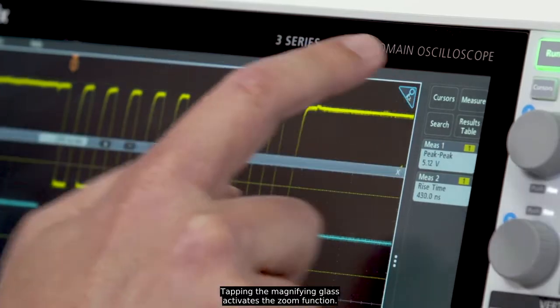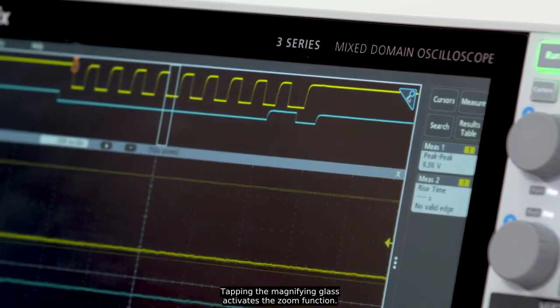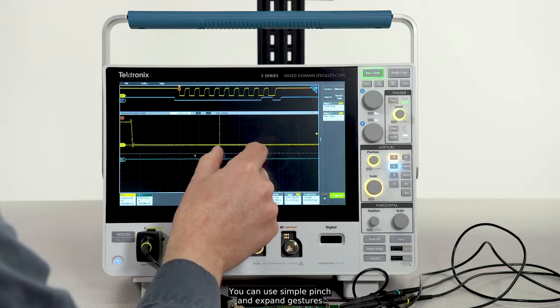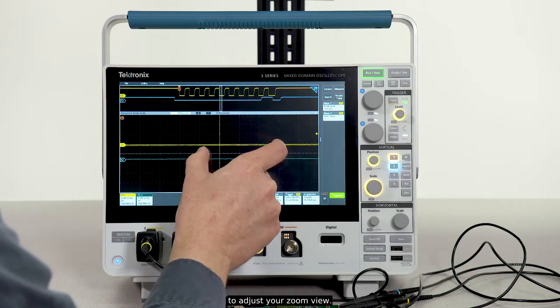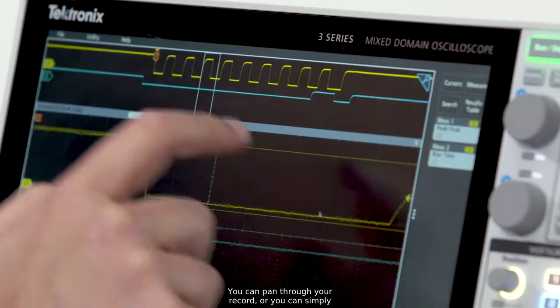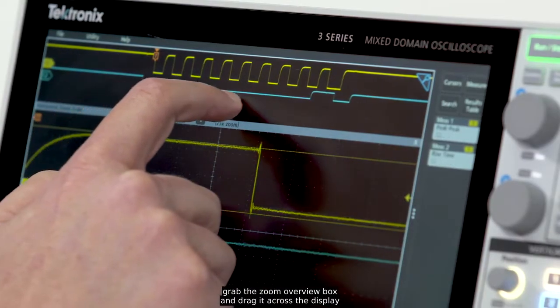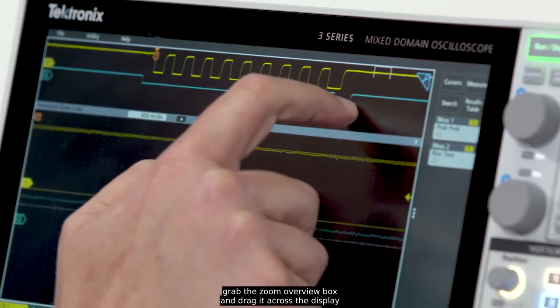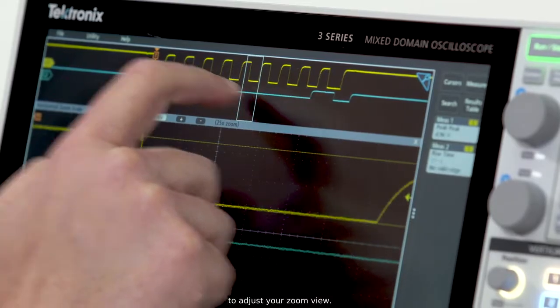Tapping the magnifying glass activates the zoom function. You can use simple pinch and expand gestures to adjust your zoom view. You can pan through your record or you can simply grab the zoom overview box and drag it across the display to adjust your zoomed view.